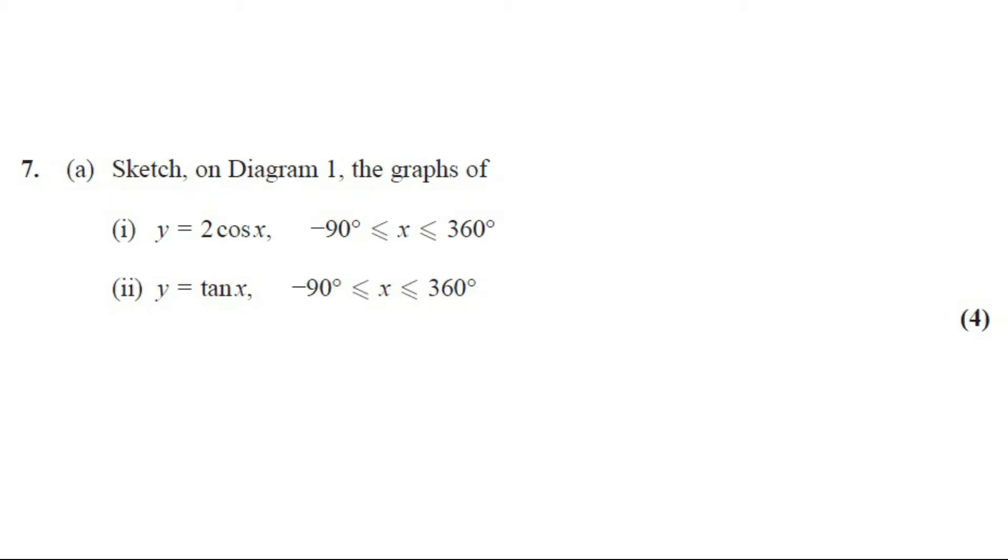Question number 7, part (a): Sketch on diagram 1 the graphs of (i) y = 2cos(x), -90° ≤ x ≤ 360° and (ii) y = tan(x), -90° ≤ x ≤ 360°.